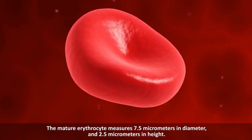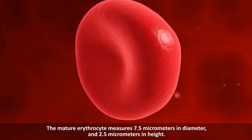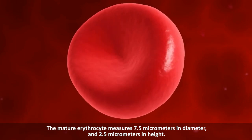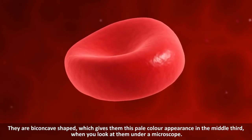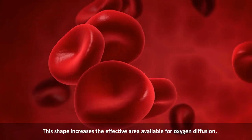Structure and function: On average, the mature erythrocytes measure 7.5 micrometers in diameter and 2.5 micrometers in height. They have a biconcave shape which gives them this pale color appearance in the middle third when you look at them under a microscope.